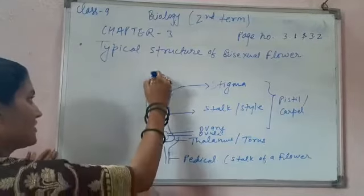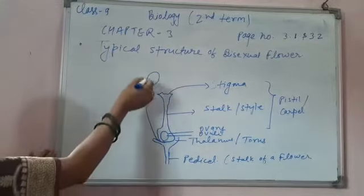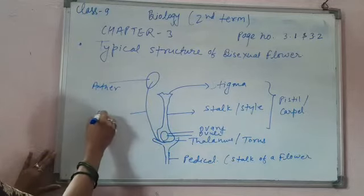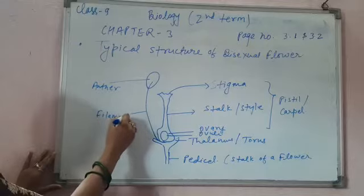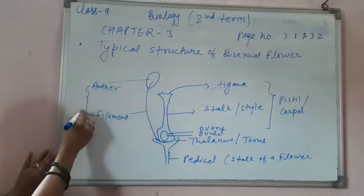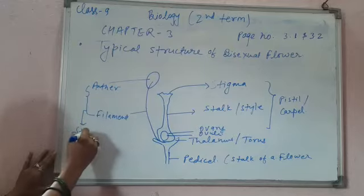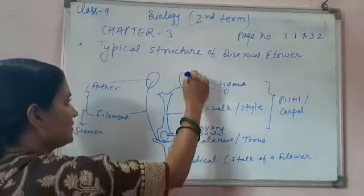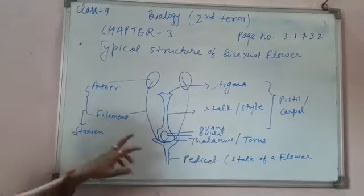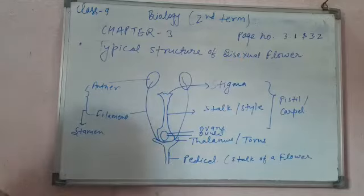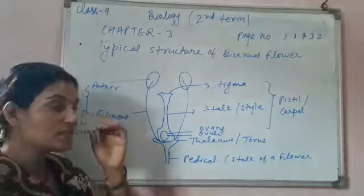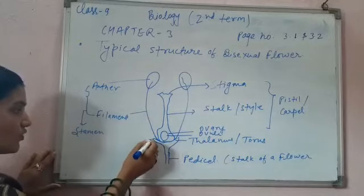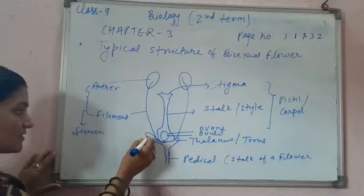Next is the male part. This one is the anther, and this one is the filament. Including both anther and filament, this structure is known as stamen. For the protection of both male and female parts, there are some non-essential whorls, which are known as calyx and corolla.